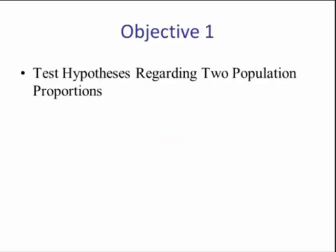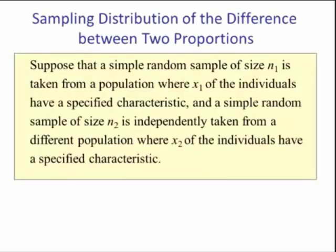Less subjective: Sampling distribution of the difference between two proportions. Suppose that a simple random sample of size n1 is taken from a population where x1 of the individuals have a specified characteristic. And a simple random sample of size n2 is independently taken from a population where x2 of the individuals have a specified characteristic.